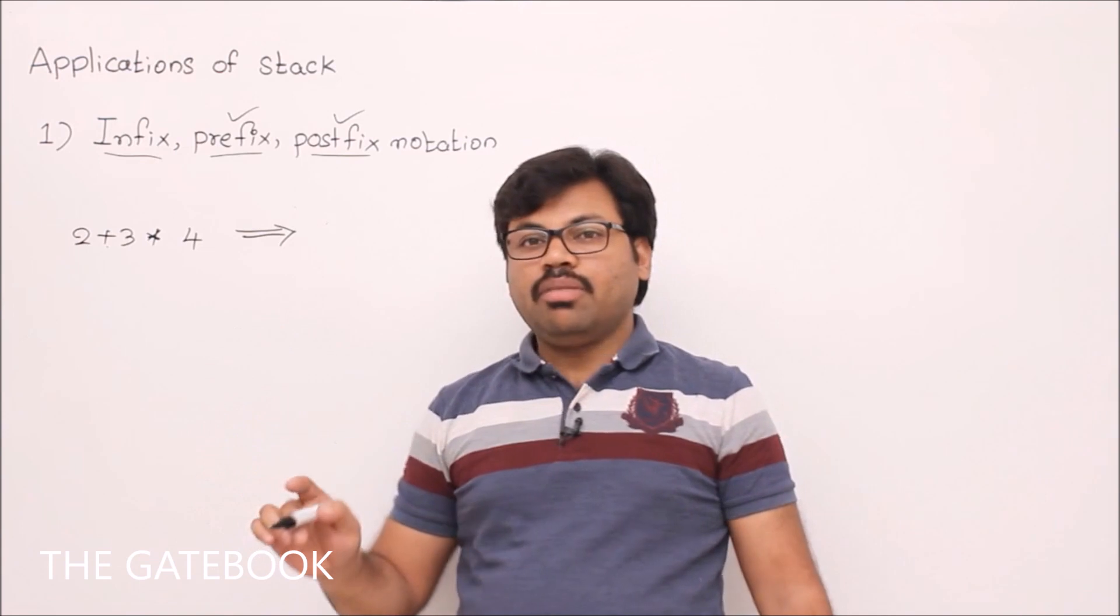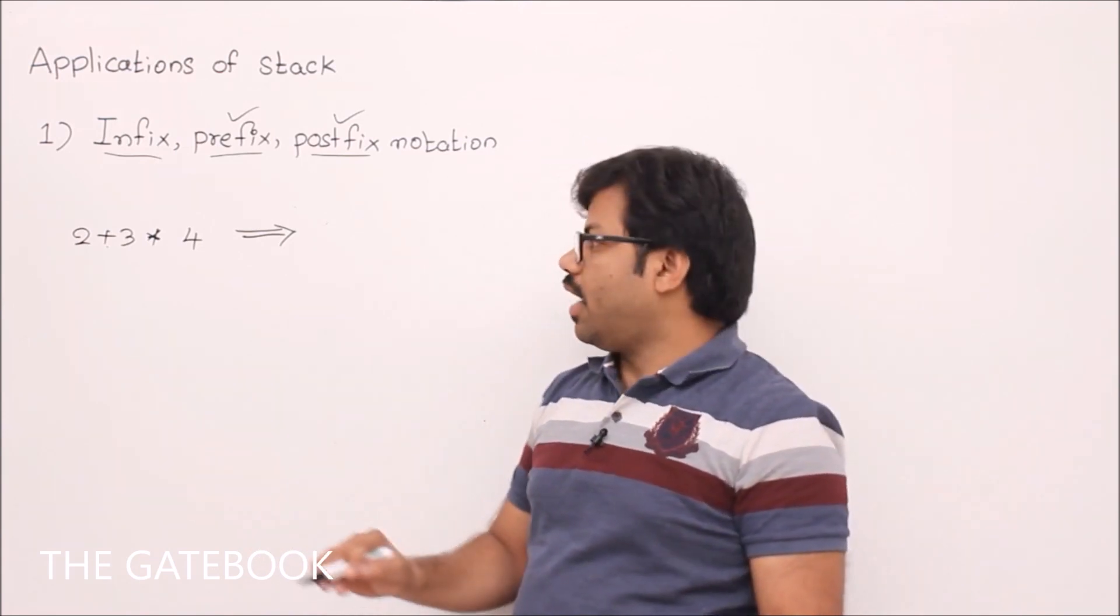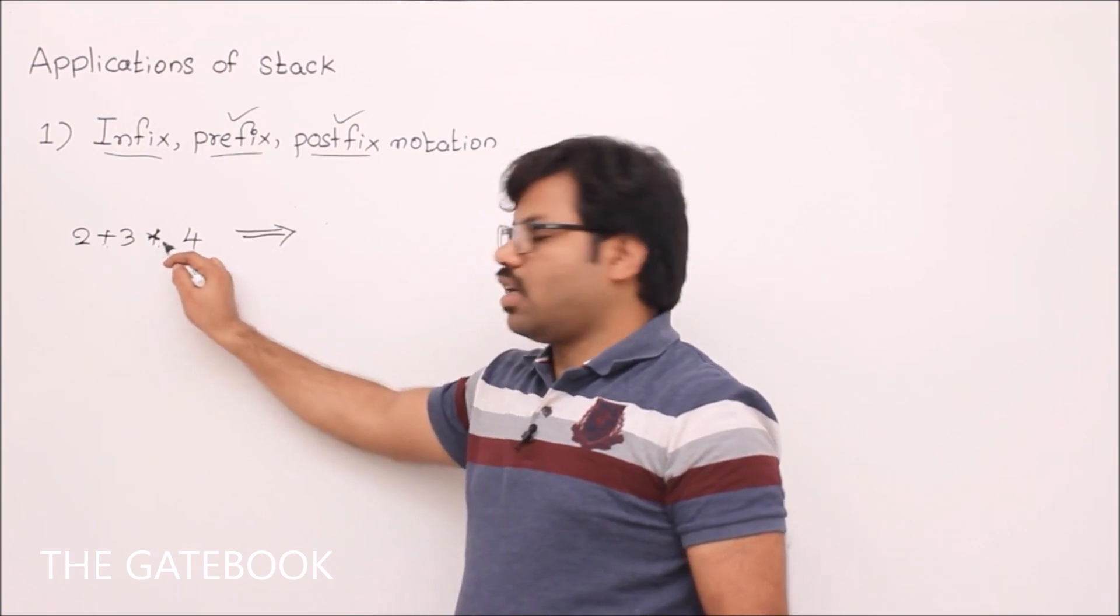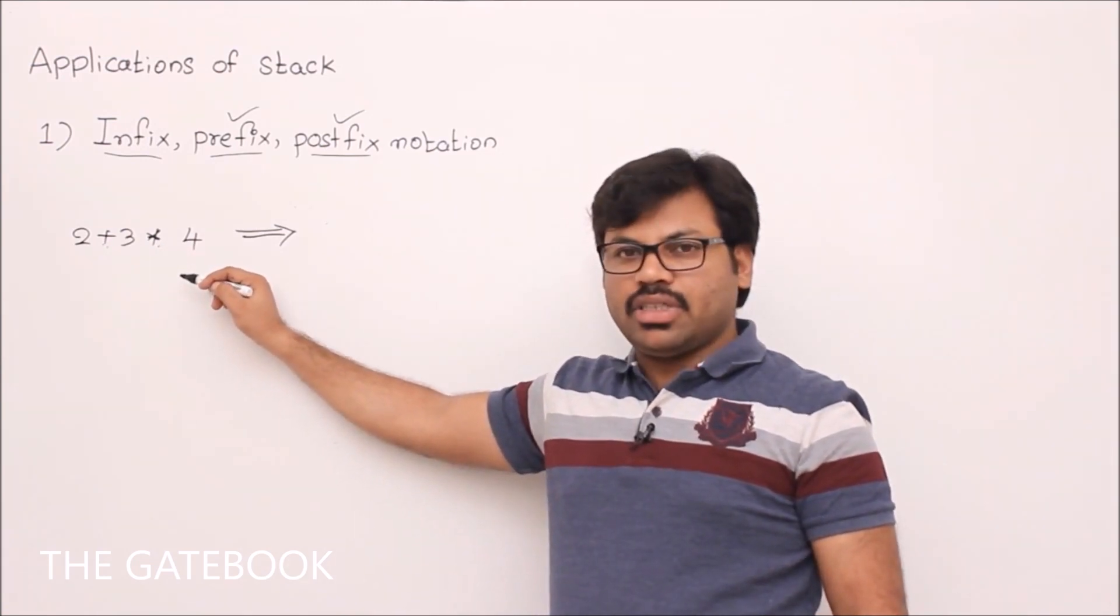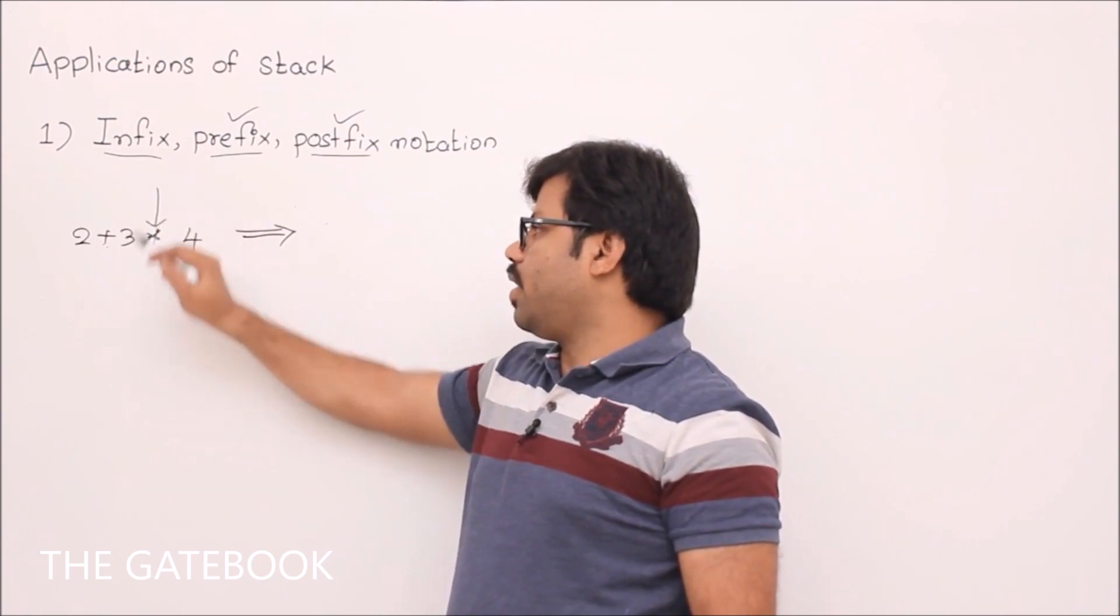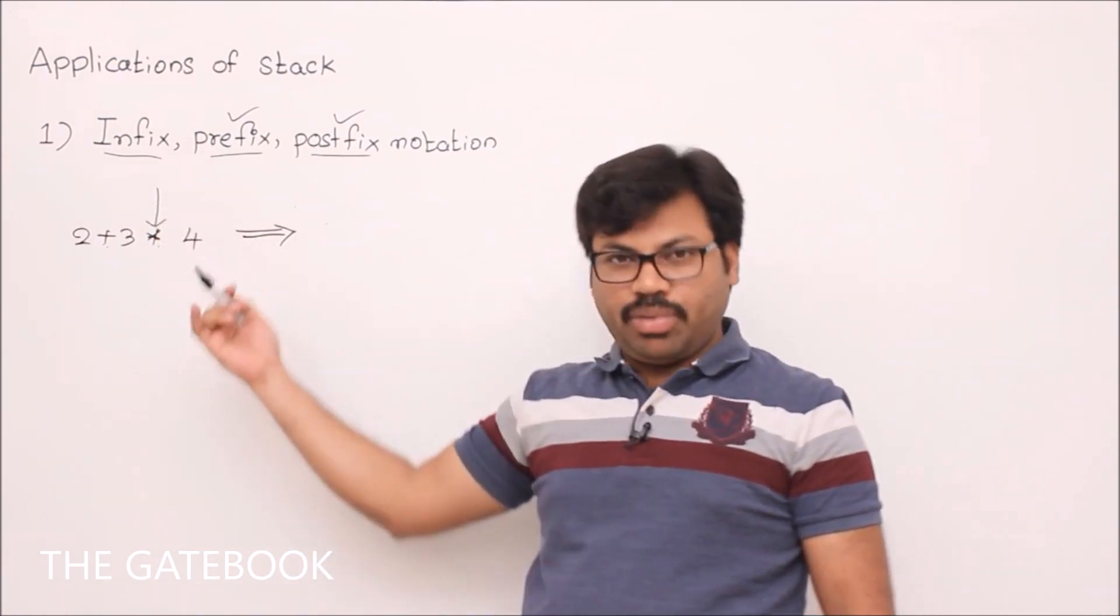First of all, we have to identify the priority of the operators and identify the highest precedence one. Here plus and star. Out of them, which one is having higher precedence in mathematics? Star. Then first target this operator and we have to convert that to prefix.